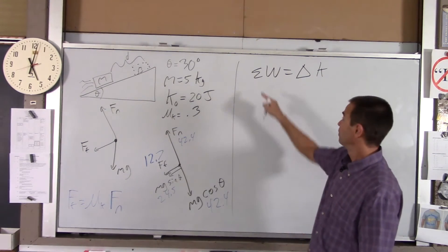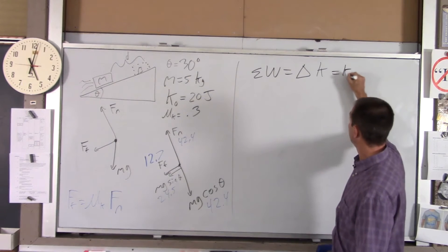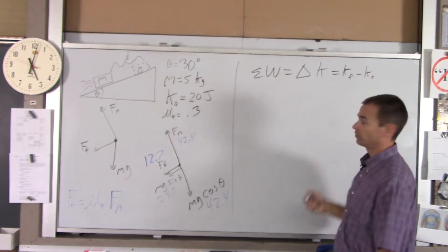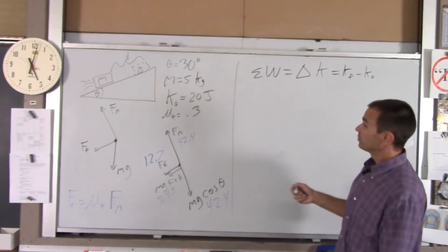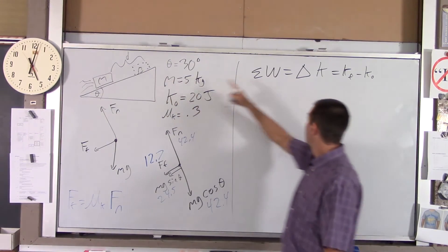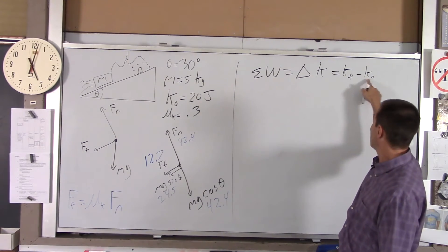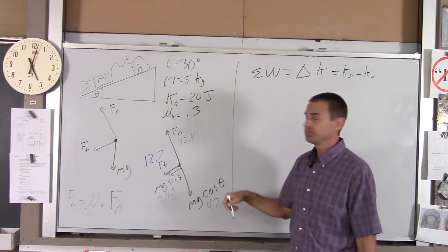Now, you've got to be careful. Network and change in. So, first of all, change in means kinetic energy final minus kinetic energy initial. Since the block is stopping, it's going to be at rest over here. Kinetic energy final is just 0. K naught, I know. I was given that. It's 20.